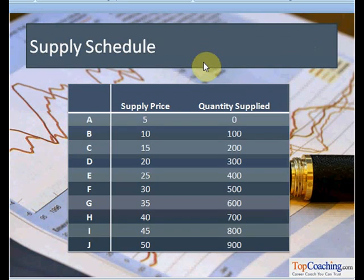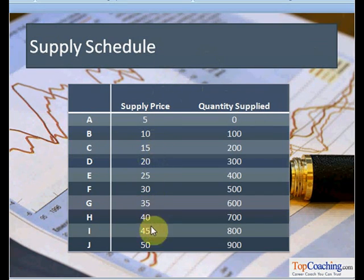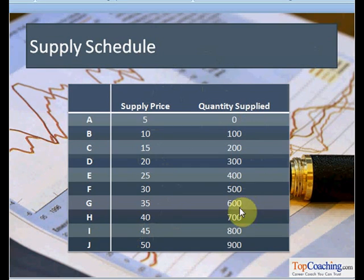Let us have a look at the given table, which is a supply schedule presenting the relationship between the supply price and the quantity supplied. As we can see, as we move down the table the supply price is increasing, and along with the increase in supply price the quantity supplied also increases — both are directly proportional to each other, as per the law of supply.